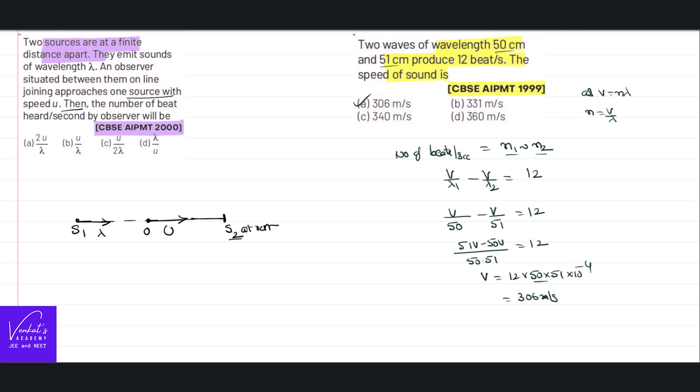And observer is in the state of motion. Then as per the Doppler effect, you can write an equation for the apparent frequency n dash. As observer is approaching the source, its frequency increases: v plus v₀ by v into n. Simultaneously.